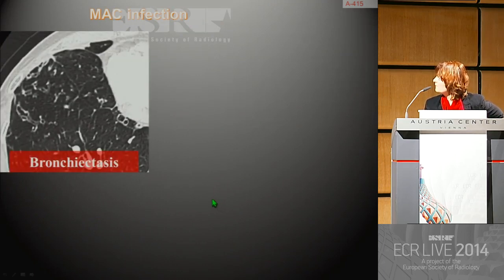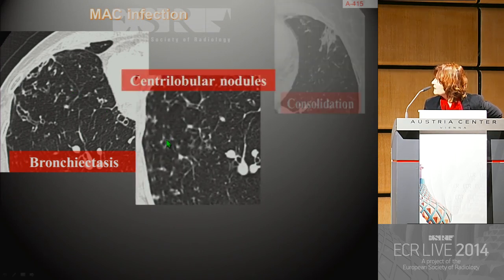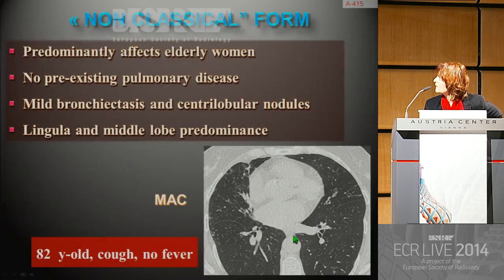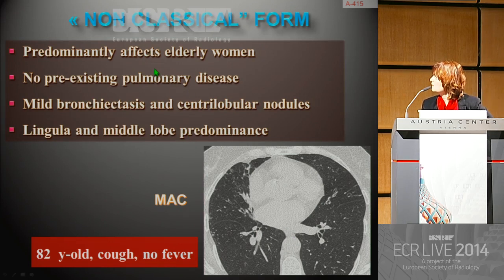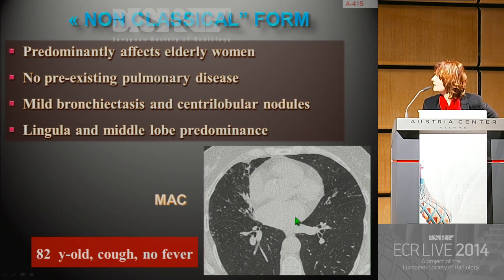The other typical CT findings in MAC infection are bronchiectasis, centrilobular micronodules, consolidation, and nodules that may be cavitated. The non-classical form, the second pattern, predominantly affects elderly women with no pre-existing pulmonary disease. It is typically represented by mild bronchiectasis and centrilobular nodules, predominantly at the level of the lingula and middle lobe. This 82-year-old woman presenting with cough and without fever shows a typical aspect of MAC infection in its non-classical form, known as Lady Windermere syndrome.